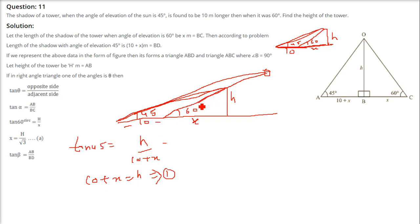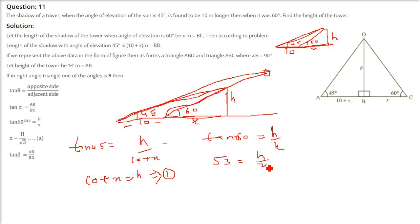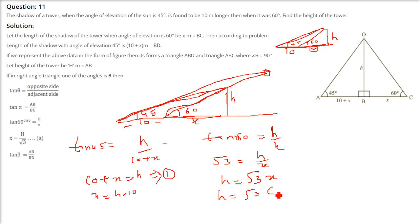Now we use the second triangle. Here tan 60 equals H divided by X. tan 60 is root 3, so root 3 equals H divided by X. Therefore H equals root 3 times X. We have to find the height of the tower, so we eliminate X. From equation 1, X equals H minus 10, and we put that here.